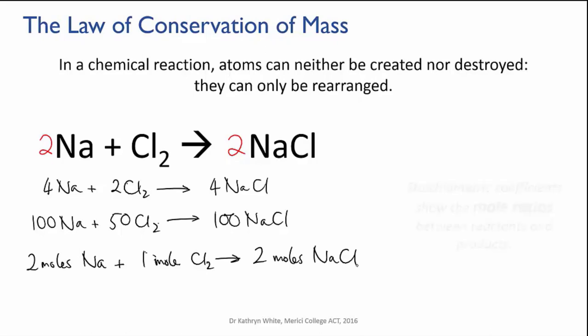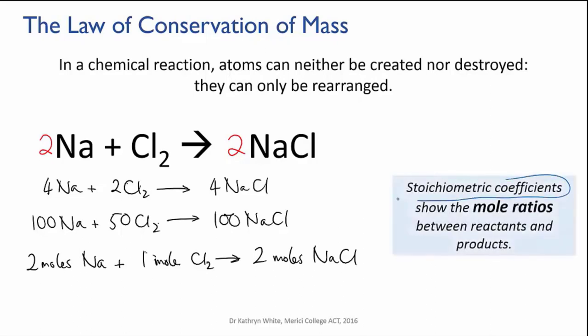The big numbers in the balanced equations are called stoichiometric coefficients, like the coefficients in algebra. And they have the same function. They tell you how many you have of the thing that follows.